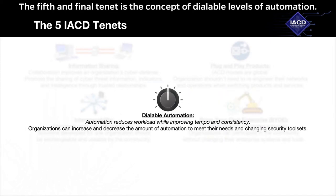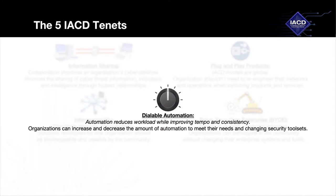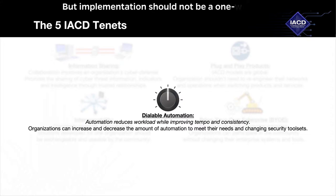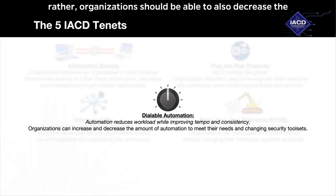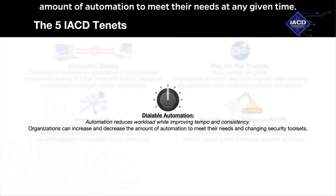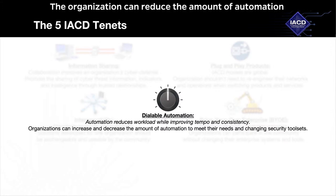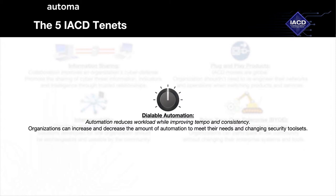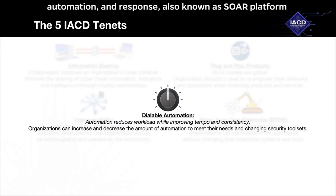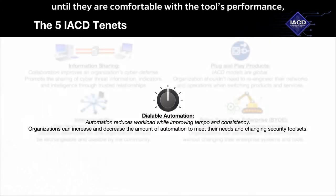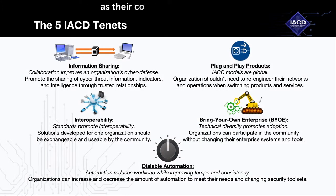The fifth and final tenet is the concept of dialable levels of automation. Automation can reduce an organization's workload while improving tempo and consistency when deployed thoughtfully and correctly. But implementation should not be a one-way road towards greater and greater automation. Rather, organizations should be able to also decrease the amount of automation to meet their needs at any given time. For example, if a new security tool is being purchased to replace a legacy system, the organization can reduce the amount of automation carried out by the security orchestration, automation and response — also known as SOAR — platform, until they are comfortable with the tool's performance, and then dial up the automation gradually as their comfort level increases.